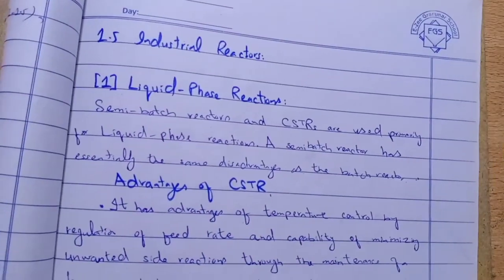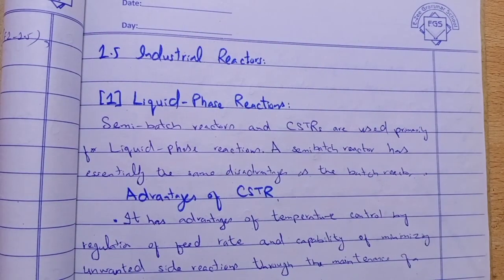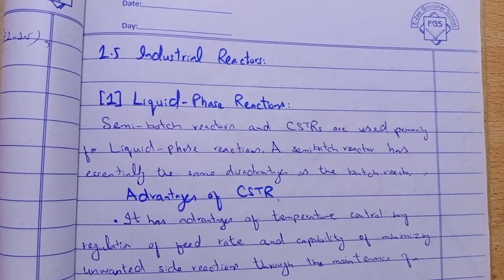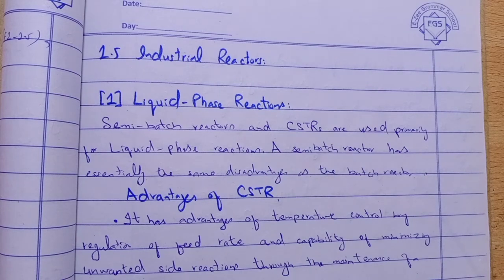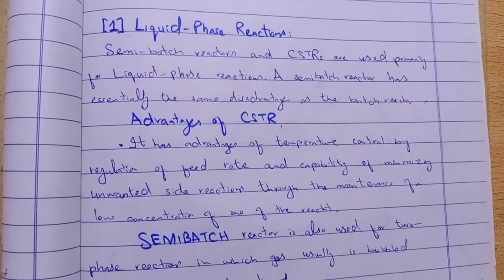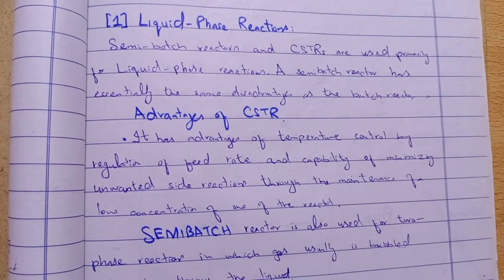In liquid phase reactions, semi-batch reactors and CSTRs are used primarily. Please remember: CSTR and semi-batch reactor are used for liquid phase reactions. The semi-batch reactor has essentially the same disadvantages as the batch reactor.